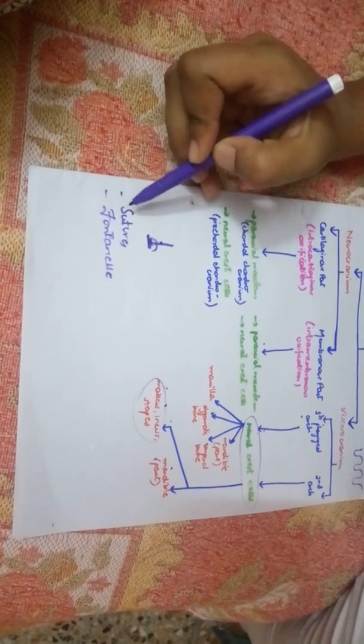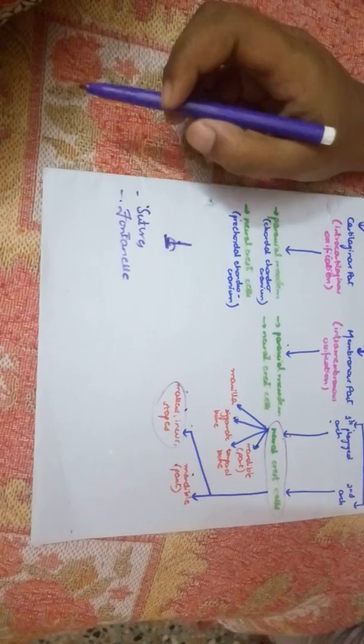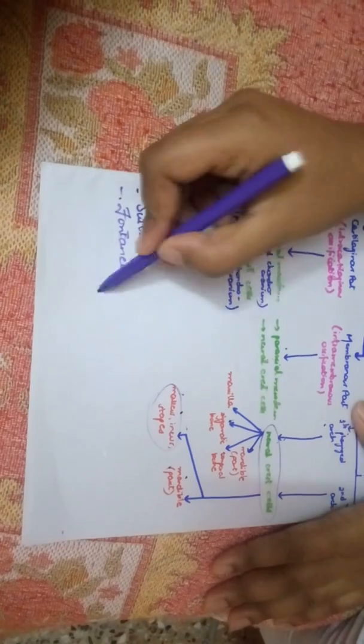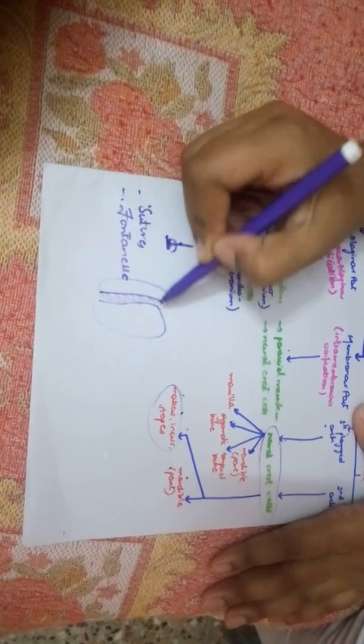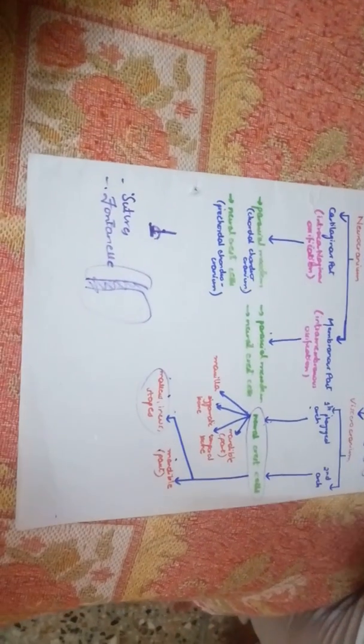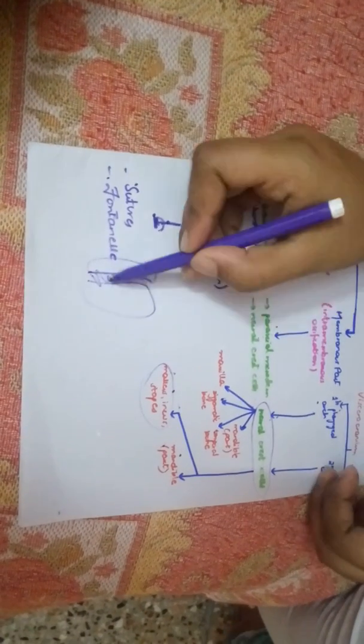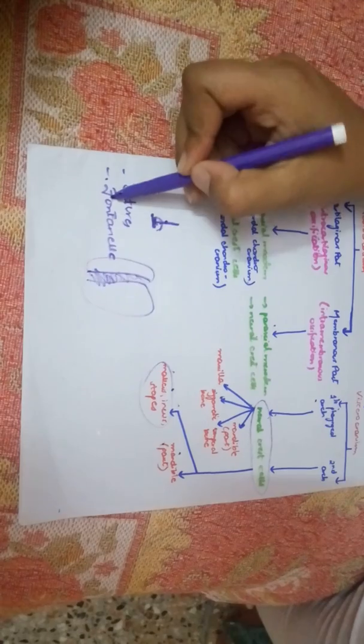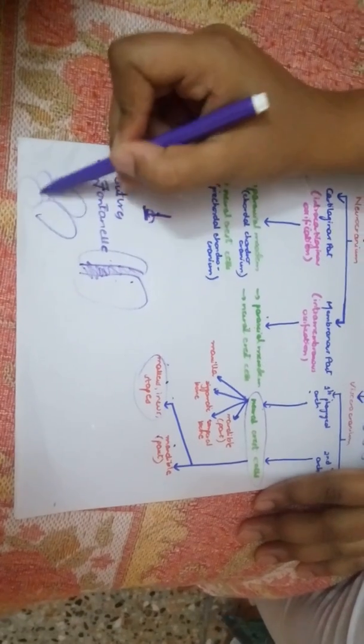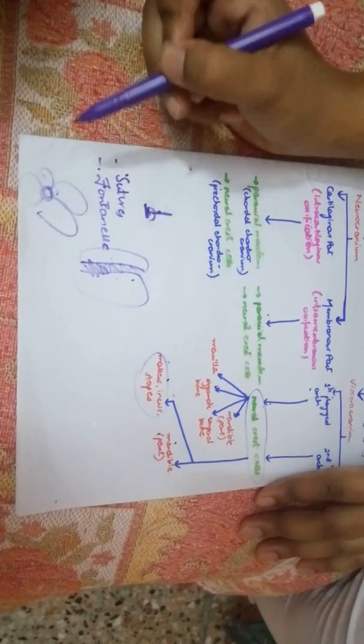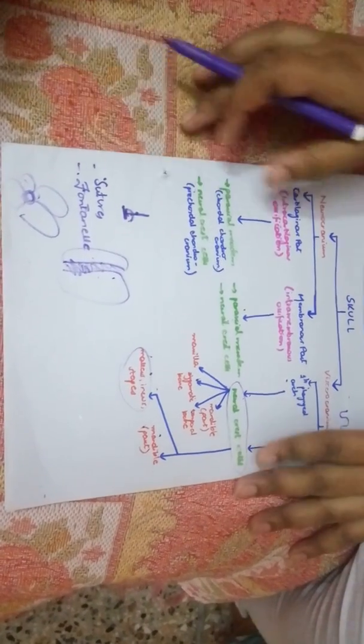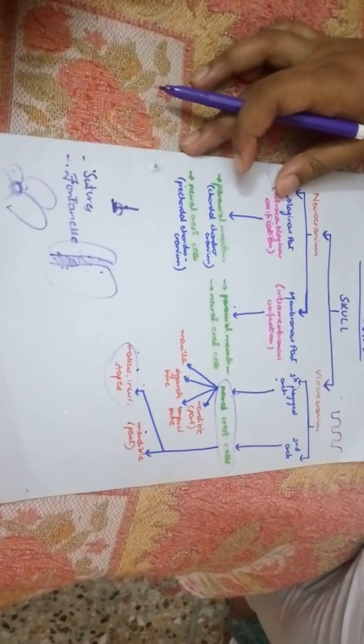The last thing is the two terms: sutures and fontanelles. At birth, bones don't completely ossify because the brain needs to grow. That's why these remain as sutures. In adults, when the brain is fully formed, these sutures ossify and join the bones. Where two bones join, a suture forms, and where more than two bones join, a fontanelle forms. For example, where four bones join with a hole in the middle, that's a fontanelle. There are anterior and posterior fontanelles. If you understand this, you don't even need to read the chapter.